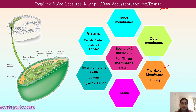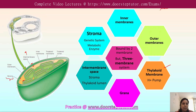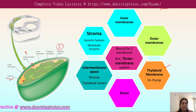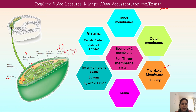The first compartment is the intermembrane space between the outer membrane and the inner membrane. The second compartment is the stroma, which lies between the inner membrane and the outside of the thylakoid membrane. The third compartment is the thylakoid lumen, which is present inside the thylakoid membrane — it is the innermost part of the thylakoid.